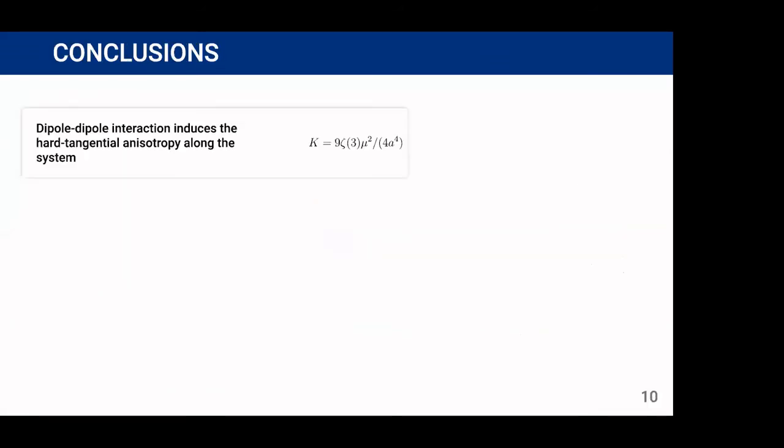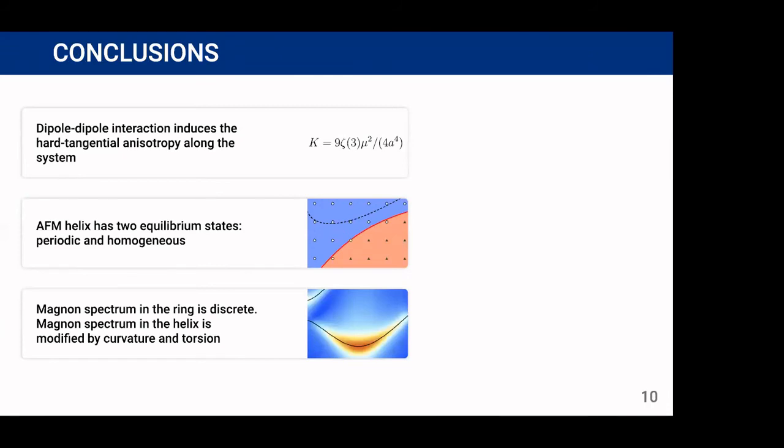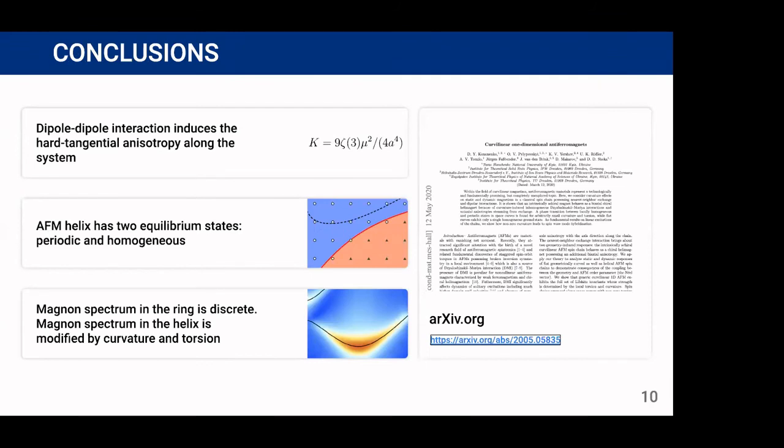So to sum up, in this work we show that magnetic dipole-dipole interaction induced the hard tangential anisotropy in antiferromagnetic one-dimensional curvilinear spin chains. We show that the antiferromagnetic helix has at least two equilibrium states, periodic and homogeneous. And we also show that magnon spectrum is discrete and magnon spectrum in the helix is modified both by curvature and torsion. The results of this project will be submitted to journal ASAP. And thank you for your time.